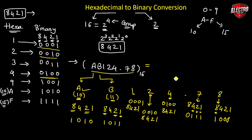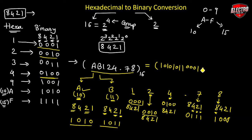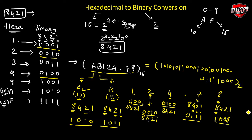To convert digit 8 we use the 8-4-2-1 code and directly find 8, giving 1000. Writing each group of four bits together, we assemble the full binary number: 1010 1011 0001 0010 0100 . 0111 1000. This is the equivalent binary number for the given hexadecimal number.